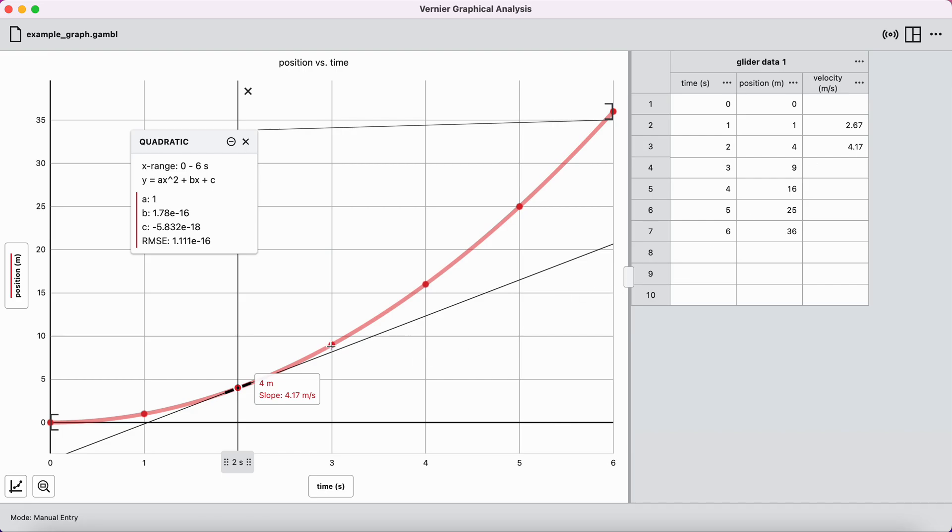I can click the next data point. I can again see that the tangent line gets steeper. And its slope is 6.00 meters per second. So, the speed, which corresponds to time t equals 3 seconds, must be 6.00 meters per second.